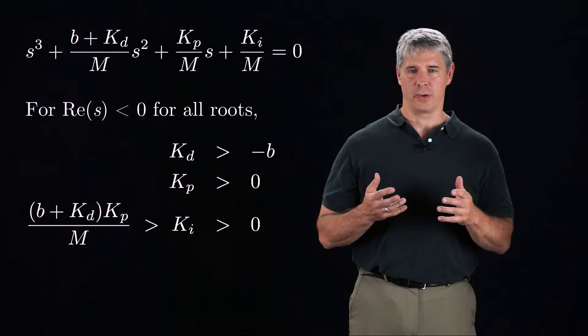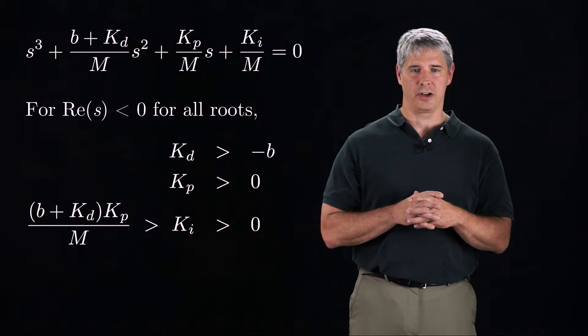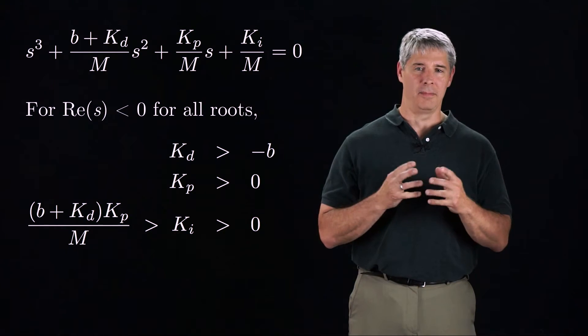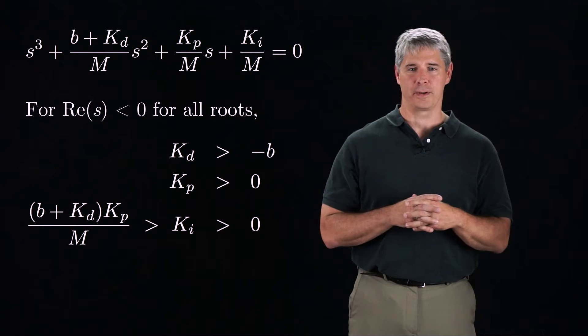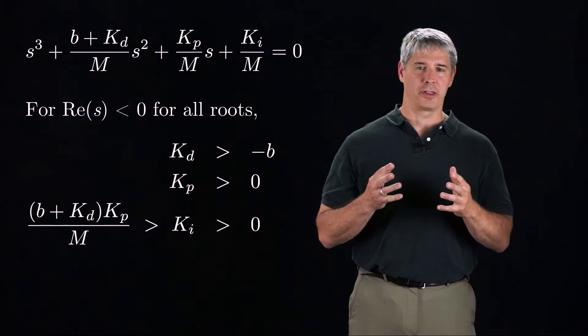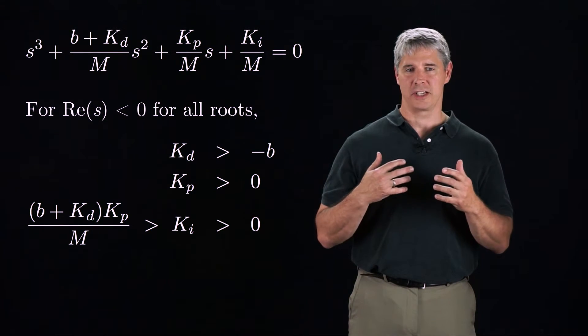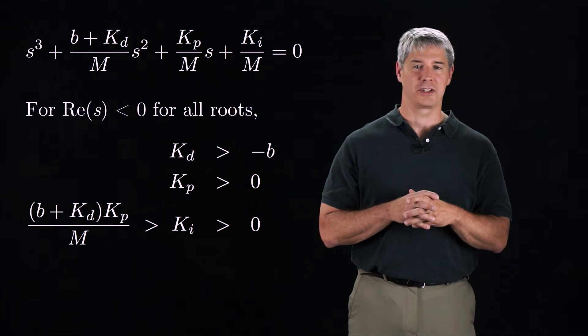Before, for our second order differential equation, the only dangers in choosing large gains were due to practical considerations like actuator limits, unmodeled dynamics, and finite servo frequencies. Now, with a third-order PID-controlled system, even our ideal linear model shows that choosing KI too large could result in instability.